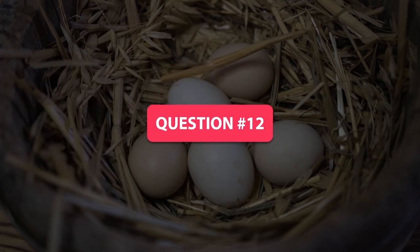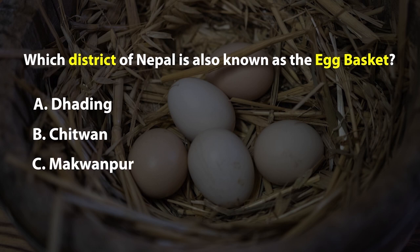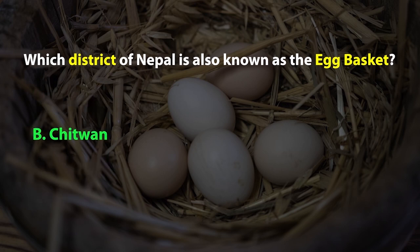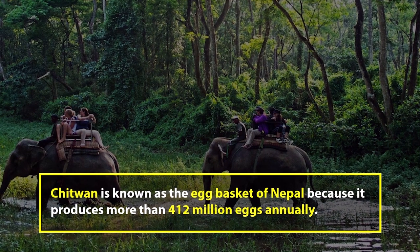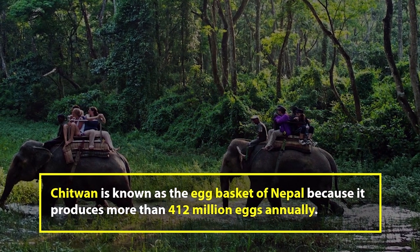Question number 12. Which district of Nepal is also known as the egg basket? A. Tading, B. Chitwan, C. Makwanpur, or D. Kaski. The right answer is B. Chitwan is known as the egg basket of Nepal because it produces more than 412 million eggs annually.